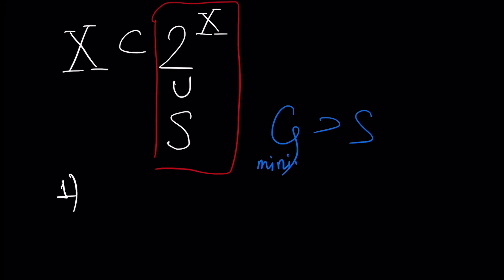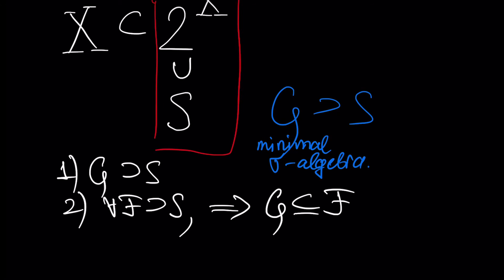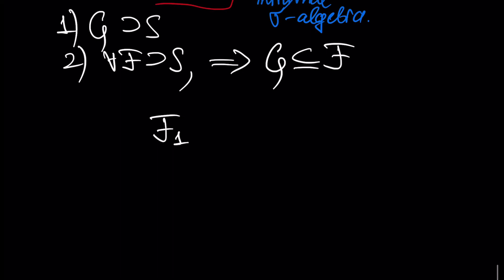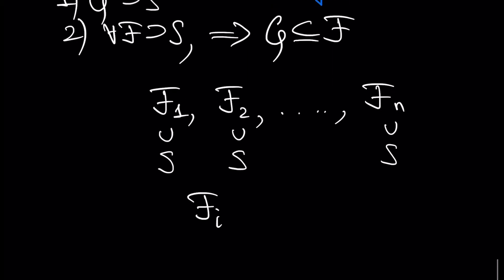This sigma algebra is called a minimal sigma algebra if, first, S is inside G, and second, for any sigma algebra F that contains our set S, our sigma algebra G — being minimal — is also inside F. In other words, assume we have N sigma algebras F₁, F₂, and so on, Fₙ, and each of these sigma algebras contains S. Then for any such sigma algebra, our minimal sigma algebra G must be inside it. This is a minimal sigma algebra by definition.